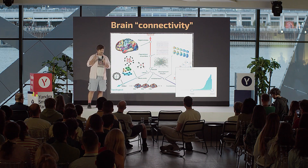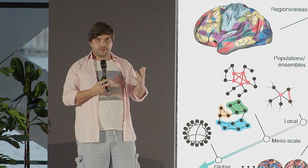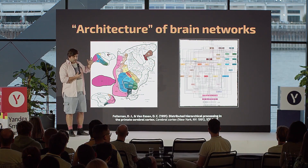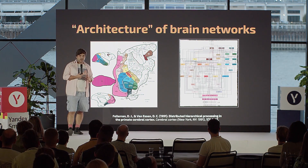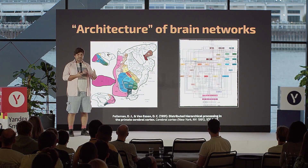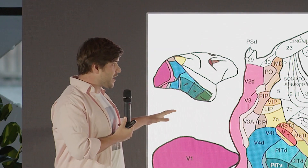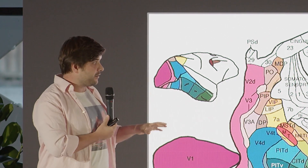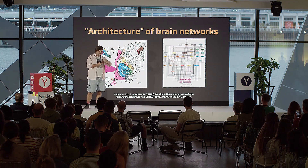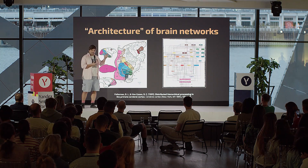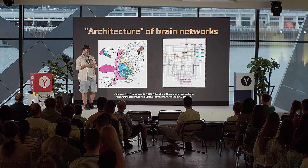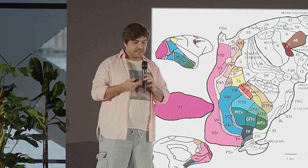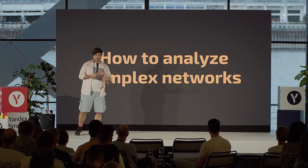But why has it become such a big area of research only now? As I said, neuroscience started from understanding that the brain is a network. The problem is that it's quite a complicated network. Here you can see a picture from 1991 where researchers tried to depict the map of the macaque visual cortex. On the left is the anatomical picture showing different nuclei, and on the right you can see the way communication works within this network. This picture is hard to understand — not only for you, but for neuroscientists as well. This complex network is really hard to understand, and here we come back to mathematics.